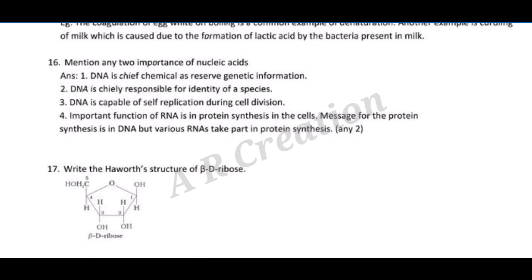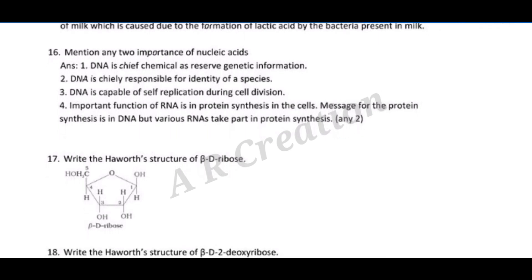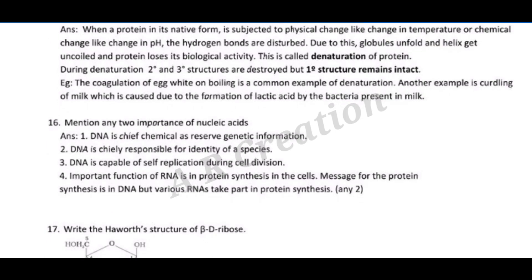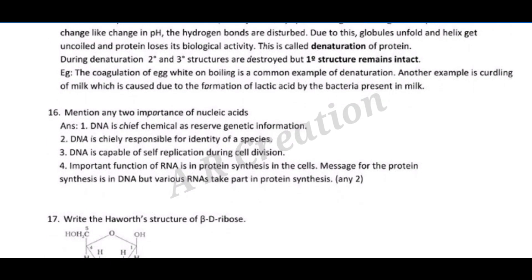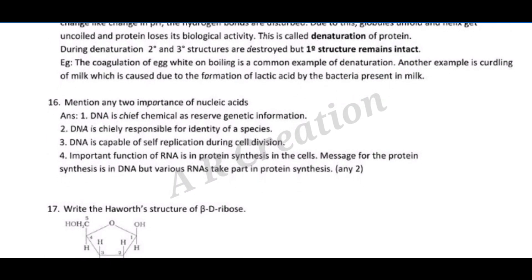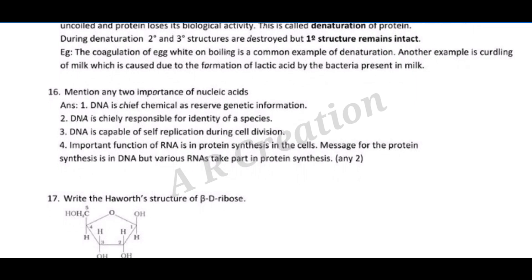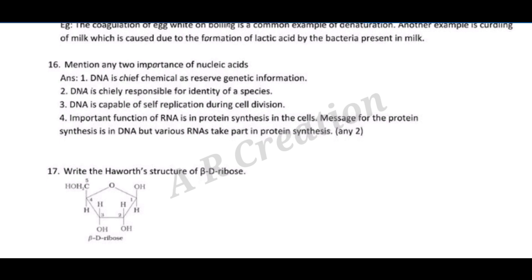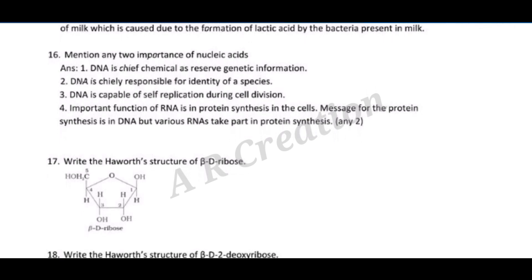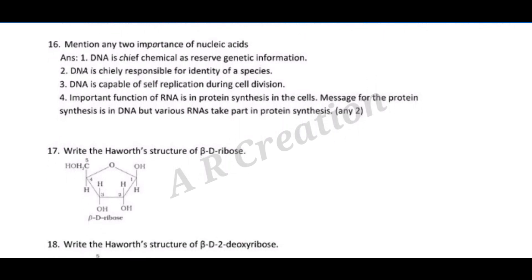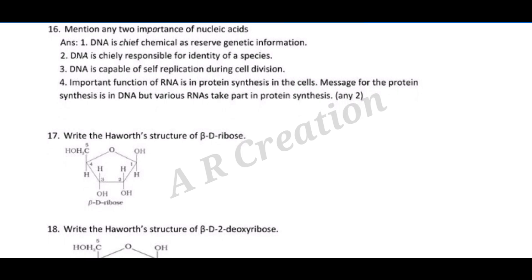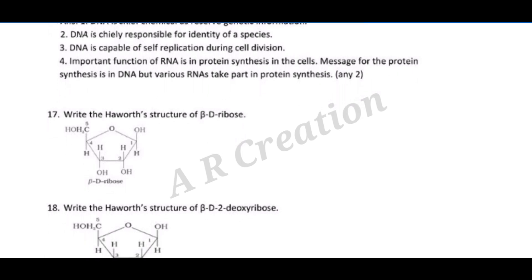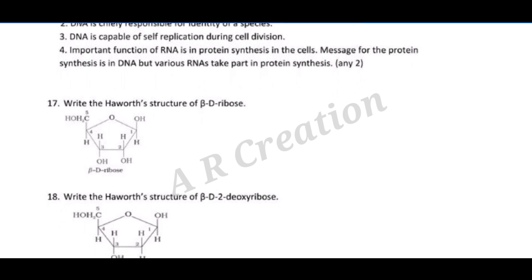Question sixteen: mention any two importances of nucleic acids. Answer: (1) DNA is the chief chemical reserve of genetic information. (2) DNA is chiefly responsible for the identity of a species. (3) DNA is capable of self-replication during cell division. (4) An important function of RNA is in protein synthesis in the cells — the message for protein synthesis is in DNA, but various RNAs take part in protein synthesis.